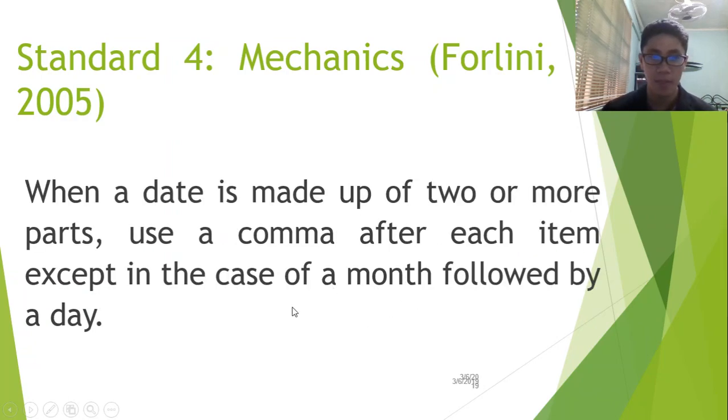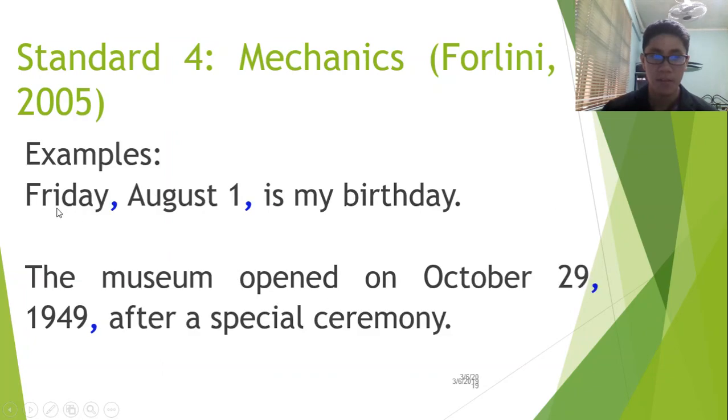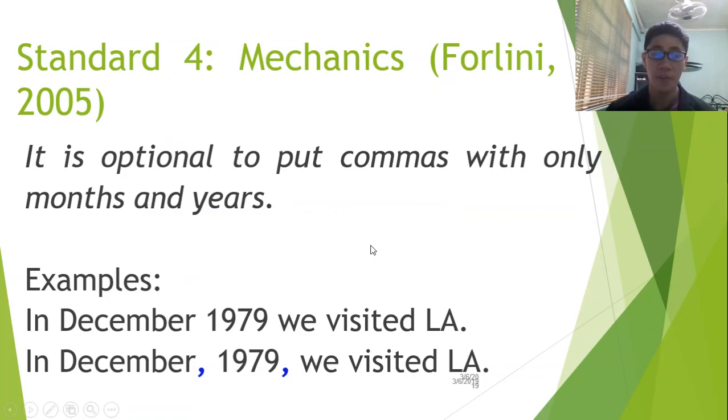Dates. We separate the day from the month with number. This is how we set them off. And don't forget to place the last comma if the date is written at the start or in the middle of your sentence. But if it's written last, then just let it be placed beside the period. If it's a complete date like this, also use the comma. But if you're just putting the month and the year, it's optional. Again, you may decide not to put the comma if it's just the month and the year.